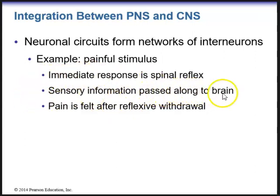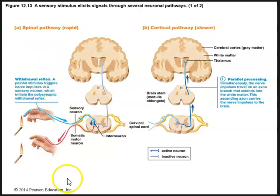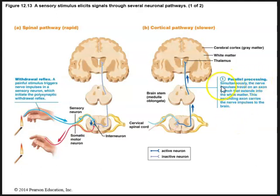Sensory information is passed along to the brain. However, pain is also felt after reflexive withdrawal. So here we see the sensory stimulus eliciting signals through several neuronal pathways. First, we have that rapid withdrawal reflex, where the painful stimulus will trigger nerve impulses in a sensory neuron, and we will then initiate the polysynaptic withdrawal reflex. However, we also have a slower pathway.